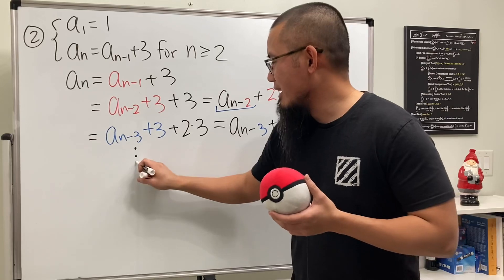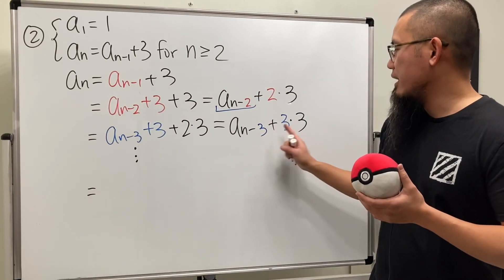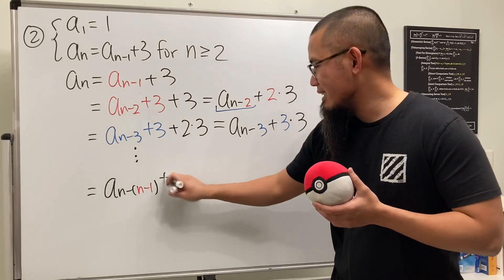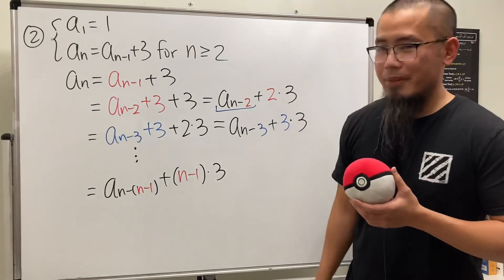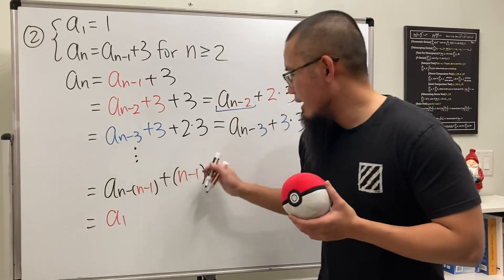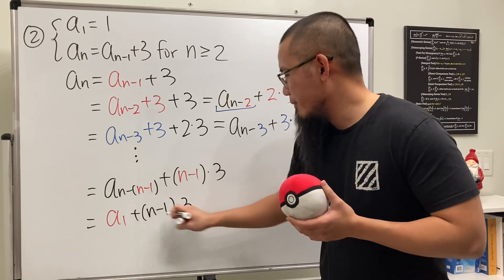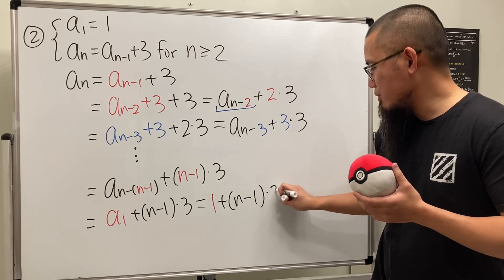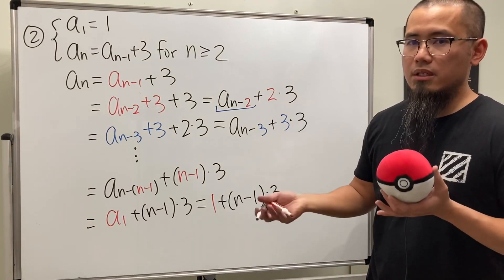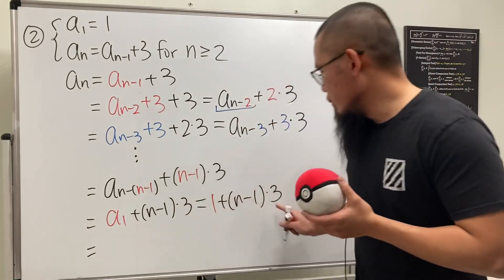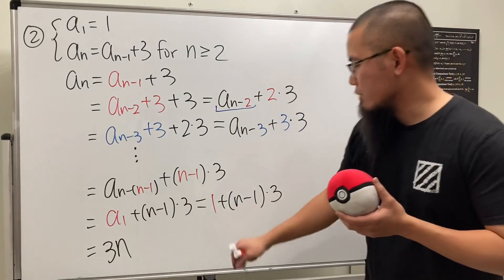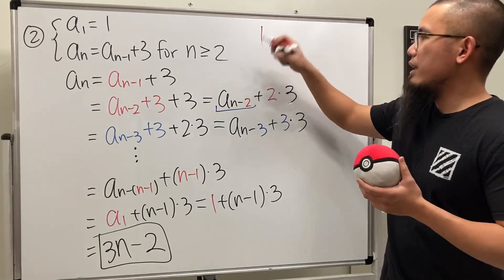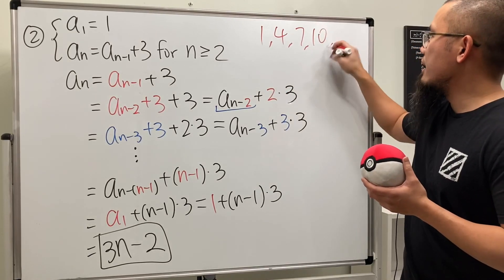We keep going and plug in n minus one, giving aₙ₋₍ₙ₋₁₎ plus (n-1)·3. That subscript is just a₁, so this equals 1 + (n-1)·3. Expanding gives 3n minus 3 plus 1, which is 3n minus 2. So aₙ = 3n - 2. You start with 1 and keep adding 3, giving 1, 4, 7, 10, and so on — arithmetic.